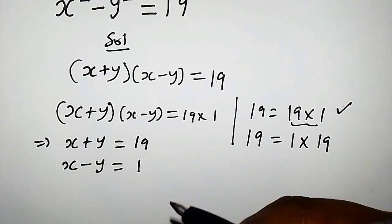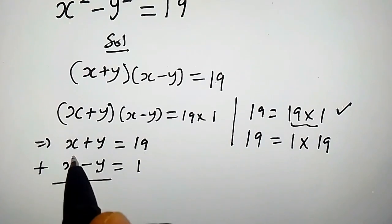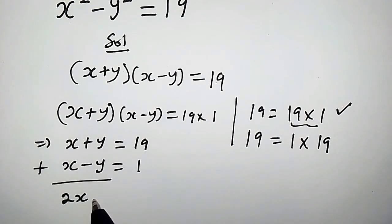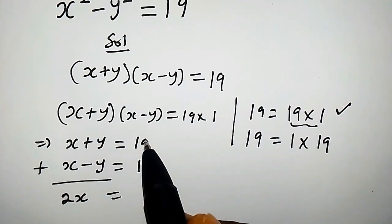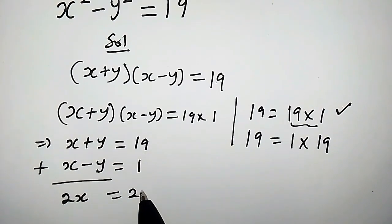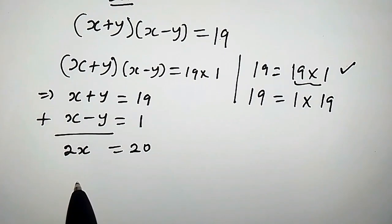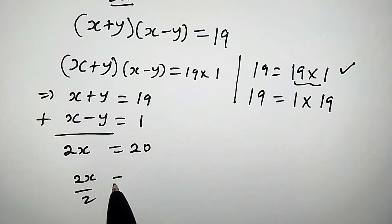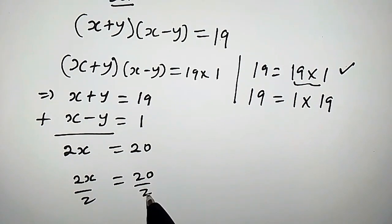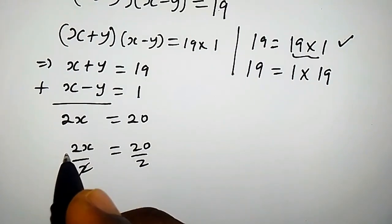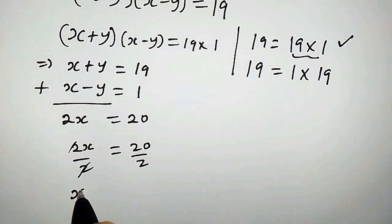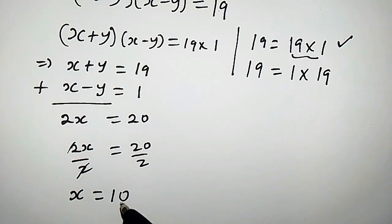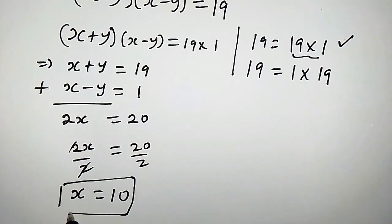These two equations can be added. We are going to have x plus x, that is 2x, and y minus y, that is 0, equals 19 plus 1, that is 20. Dividing both sides by 2, we have 2x over 2 equals 20 over 2. So x equals 10.